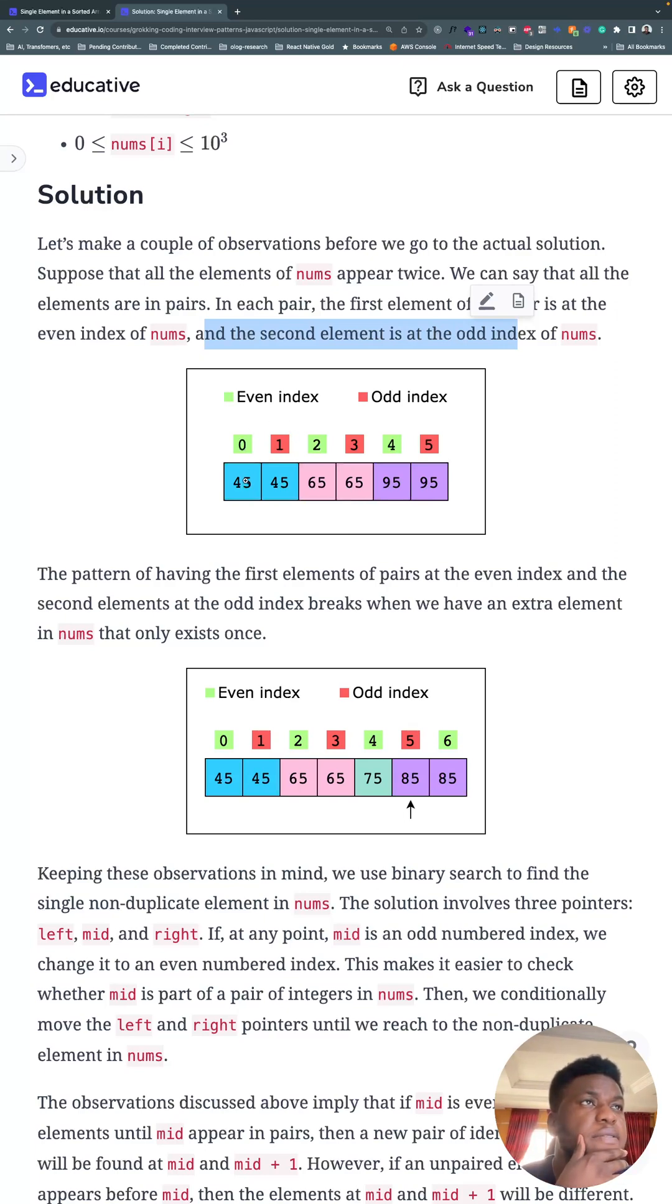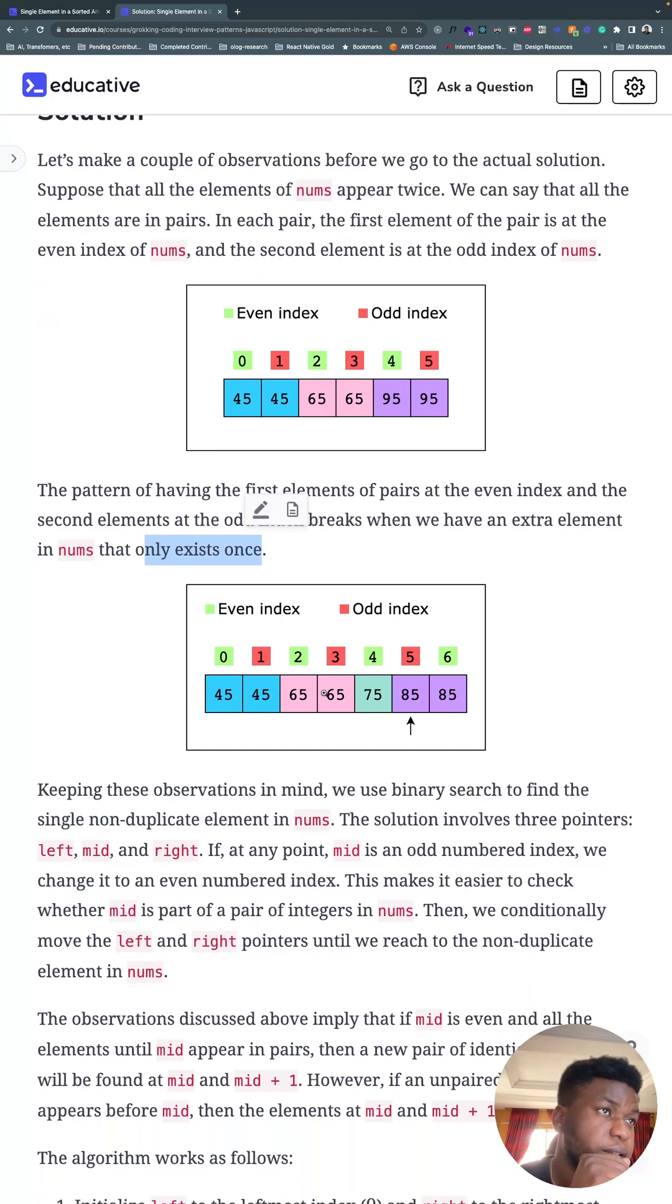then the first occurrence is always in an even index—zero, two, four—and the second is always in an odd index—one, three, five. Now this pattern breaks when we have an extra element in numbers that only exists once. For example, the pattern keeps going but then it broke. The first instance is supposed to be in an even numbered index, but because of this guy it became an odd numbered index.